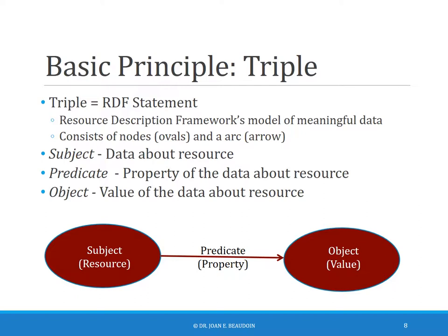The triple part of the RDF statement comes from the fact that there are three parts. There's the subject, which is data about the resource. There's the predicate, which contains the property of the data about the resource as it relates to the object, which is the value of the data about the resource. And this sounds much more complicated than it actually is.